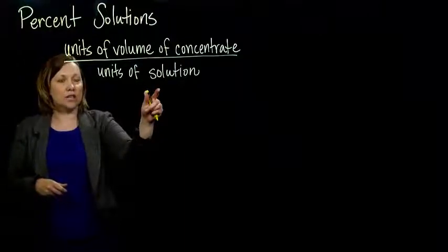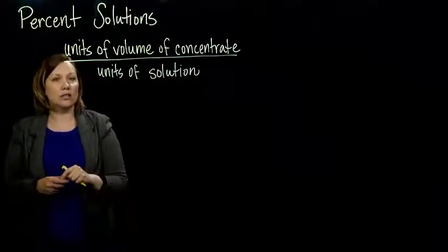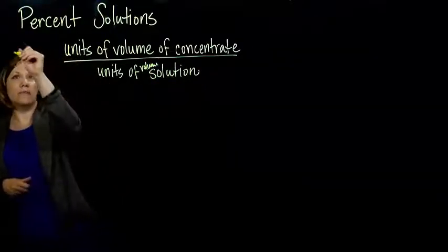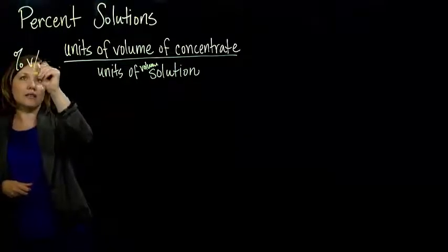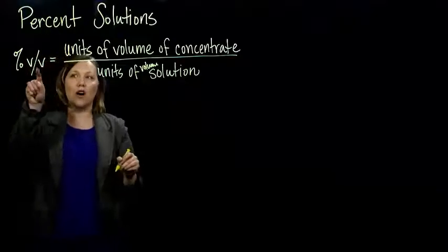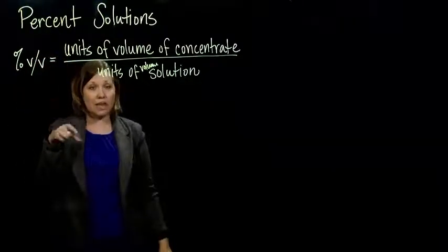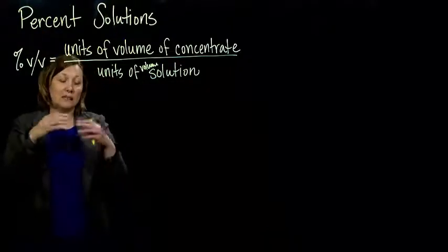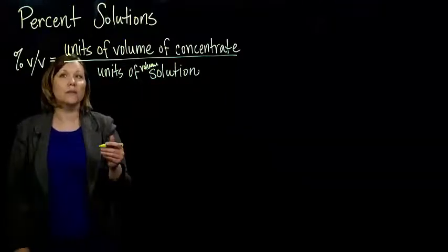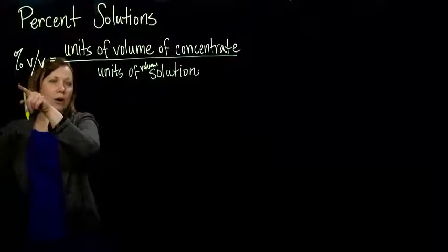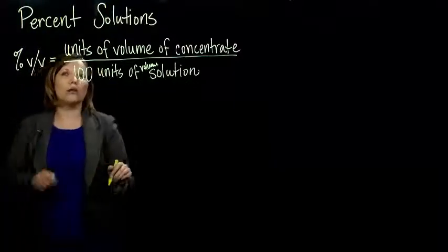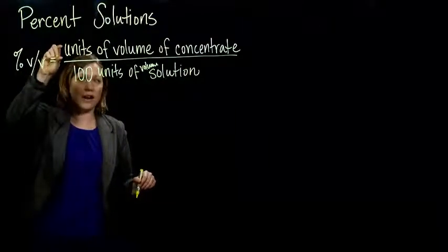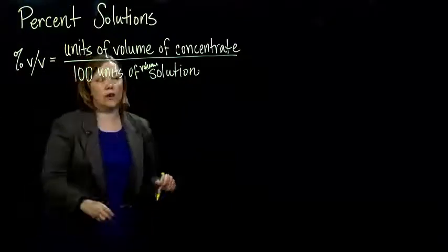When we talk about units of volume in units of volume of solution, we write V per V — volume per volume. This tells us that we're mixing something liquid in something else liquid, within a volume of solution. Remember that the percent sign means per 100. So percent volume per volume means the units of volume of our concentrate per every 100 units of volume in solution.